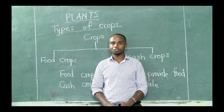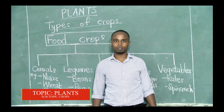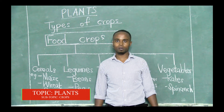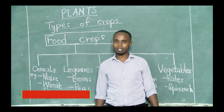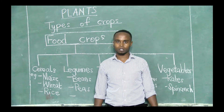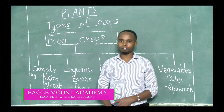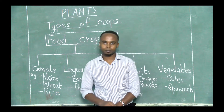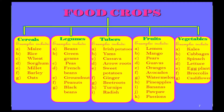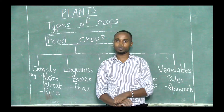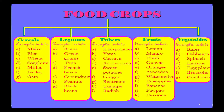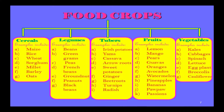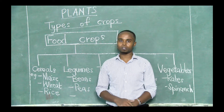From here, I want us to talk about food crops and look at some examples. Food crops are grouped into five groups. Group one, we have cereals. Number two, we have legumes. Number four, we have fruits. Number five, we have vegetables. Those are the five groups of food crops, and mostly these food crops are grown to provide us with food.